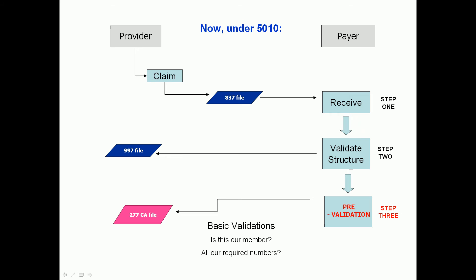The 277 CA is a claim acknowledgement file. It does not contain whether or not a claim is going to be paid or denied like a remittance — it contains accepts and rejects. The claims have either been accepted or rejected. And almost immediately you get this response; some payers are real-time or close to real-time, some have a few-hour turnaround, and the most we've ever witnessed is a 24-hour turnaround. So instead of waiting weeks and weeks, you find out almost immediately and are able to re-bill in many cases, improving your cash flow.